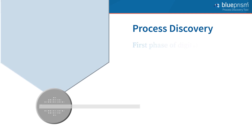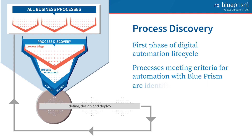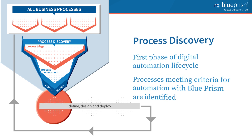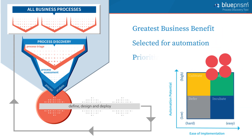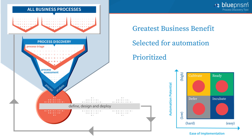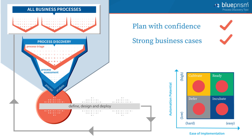Process discovery is the first phase of the digital automation lifecycle, during which processes that meet the criteria for automation with Blue Prism are identified. From this pool, the processes that deliver the greatest business benefit can be selected for automation and prioritised according to the needs of your organisation. A robust approach to process discovery brings with it the ability to plan with confidence and to make strong business cases for automating your processes, thus maximising the pipeline of opportunity available to your organisation.